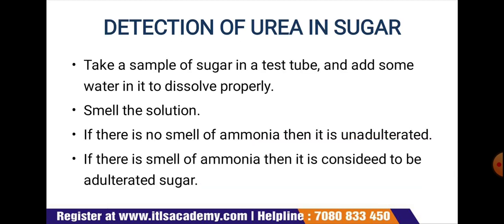Next is the detection of urea in sugar. Take a sample of sugar in a test tube, add some water to dissolve it properly, and smell the solution. If there is no smell of ammonia, the sugar is unadulterated. If there is a smell of ammonia, it is considered to be adulterated sugar.